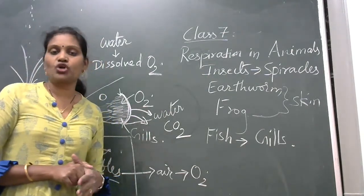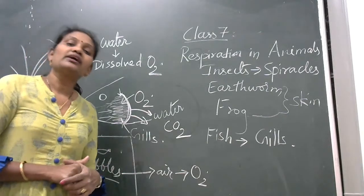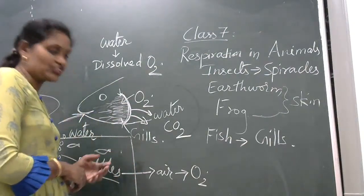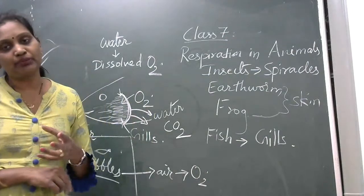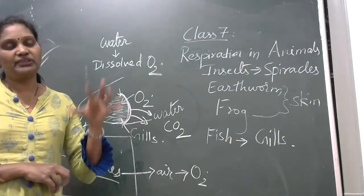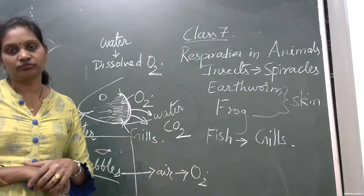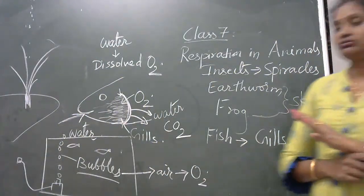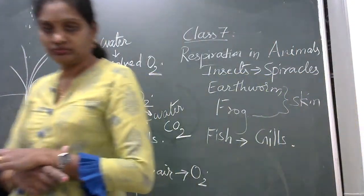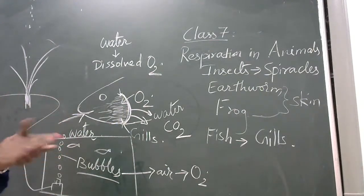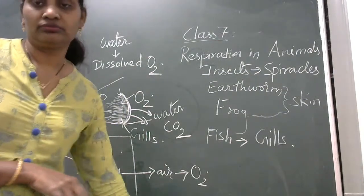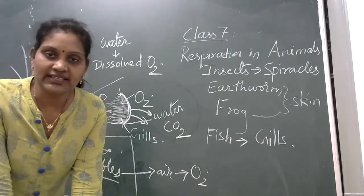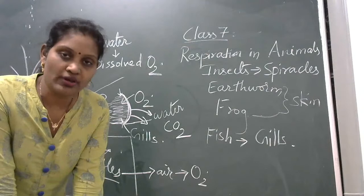Turtle is not a fish. Turtle and tortoise are reptiles. Reptiles only go into the water for a few periods — not the whole life they are living under the water. Yes, octopus has gills. Small animals like mollusks — small aquatic animals — they are also having gills.